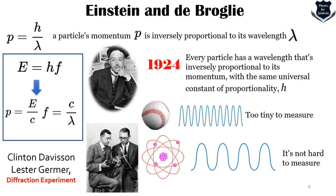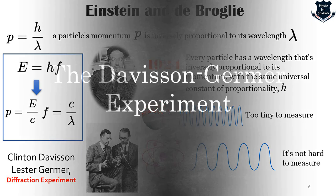In the next part of the video we will see what was the Davison-Germer experiment, the diffraction experiment. We will look into it and try to understand how these two gentlemen proved the de Broglie hypothesis.